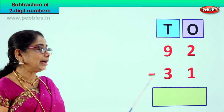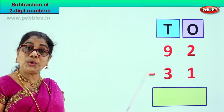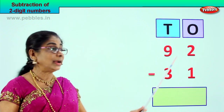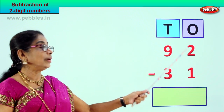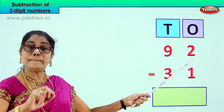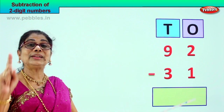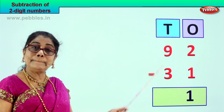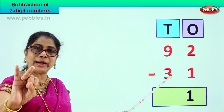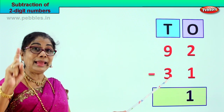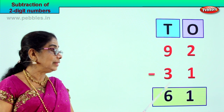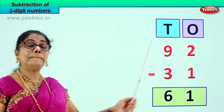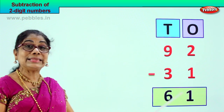Ninety-two minus thirty-one. We have put them in ones and tens order: nine tens, two ones minus three tens, one one. In the ones place: two minus one is one. In the tens place: nine take away three — three, four, five, six, seven, eight, nine — that is six. Nine take away three is six. Your answer is sixty-one. Ninety-two minus thirty-one, your answer is sixty-one.